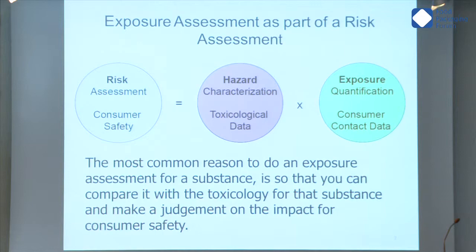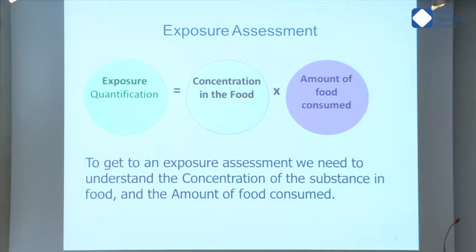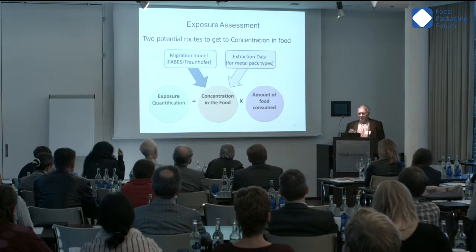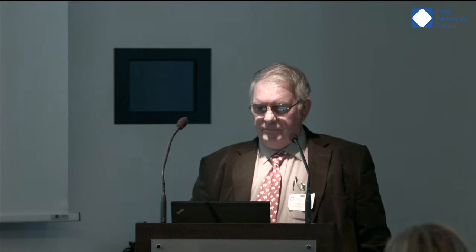The most common reason for doing this is to compare the toxicology of the substance and make a judgment on its safety — basically, a margin of exposure. To get the exposure, we need to know the concentration in the food and how much of that food every person in the population ate in the survey. Most of these surveys are around 2,000 people. We have two routes for getting concentration: the migration model from Farbes and Fraunhofer, used for plastics, paper and board, and inks; and extraction data for can coatings, metal lids, etc.